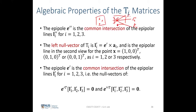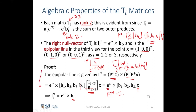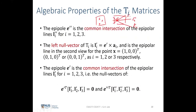This epipole e'' can be computed as the left null space of the matrix formed by concatenating the three epipolar lines l''_i. Similarly, the left null space of Ti gives the epipolar line in the second view corresponding to the points (1,0,0), (0,1,0), and (0,0,1). I'll leave the derivation for you to try yourself.